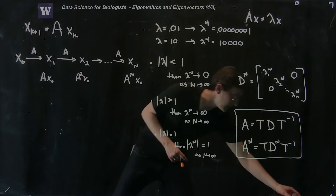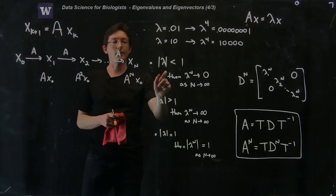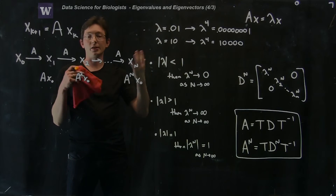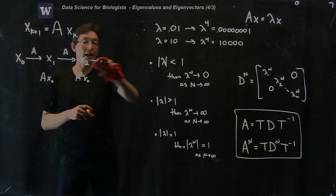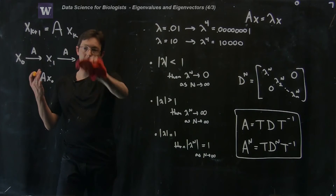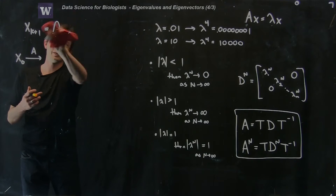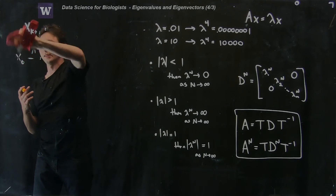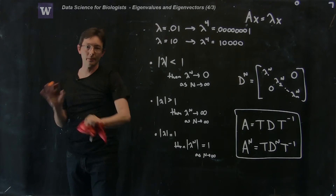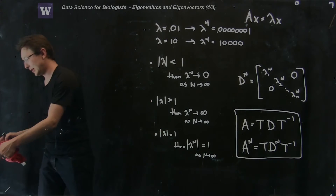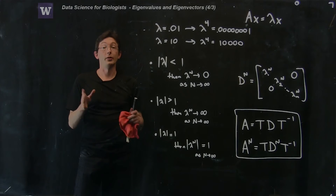Up until now I've been talking as if lambda is just a real number, like 0.01 or 10. But in reality, eigenvalues of a matrix can be complex numbers — they can have a real and an imaginary part. This happens all the time in mathematics and is totally normal. It makes the expression lambda to the n a little bit more complicated, so the last thing I want to show is what happens when eigenvalues are actually complex numbers.